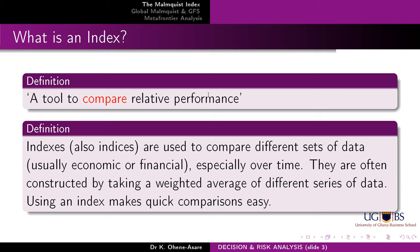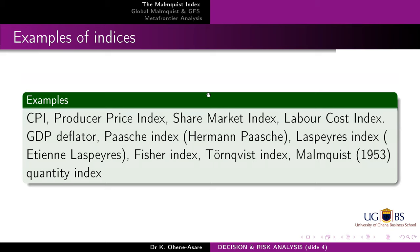We are looking at using a tool to compare different sets of economic data over time. They are usually constructed by taking a harmonic mean or weighted average of different series of data. Some of you will know the consumer price index, the producer price index. Sometimes when you listen to the news, you hear of the share market index, the labor cost index, the GDP deflator. The price index — the Laspeyres, the Paasche, the Fisher index, the Törnqvist, the Malmquist. All of these are indices. We can talk about price indices or quantity indices.